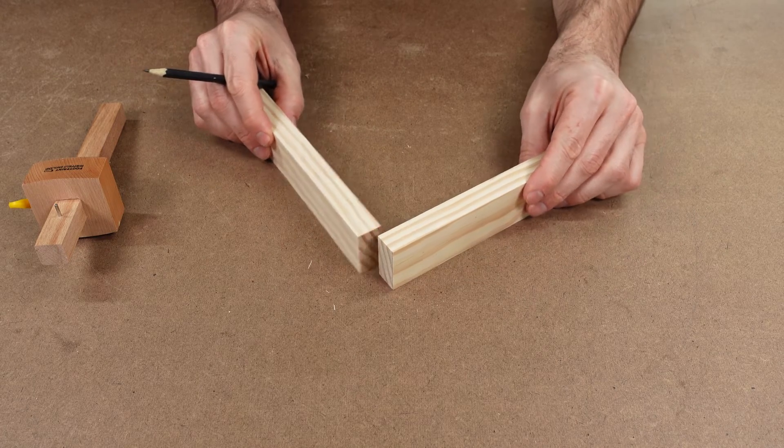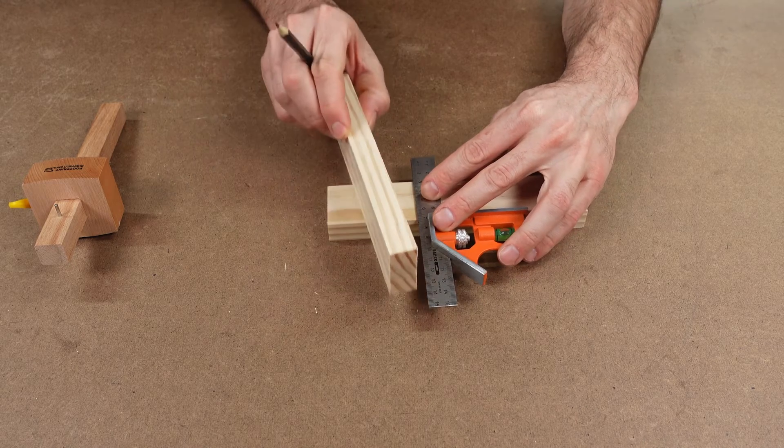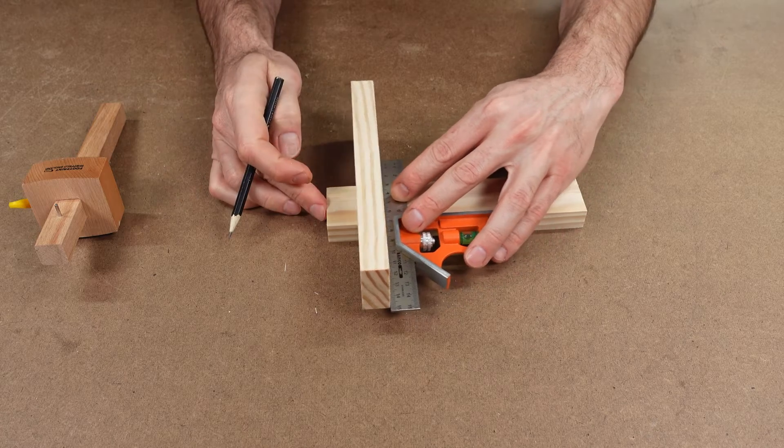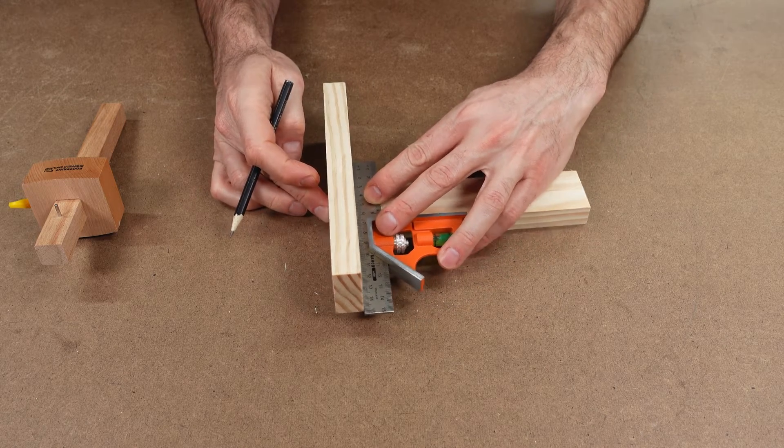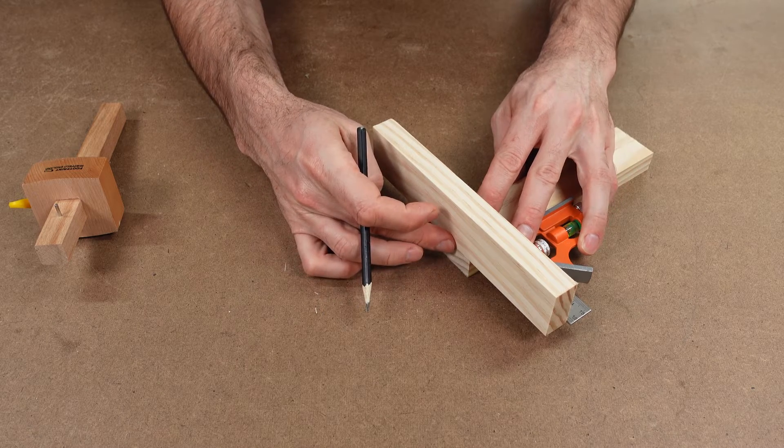Once again, it's easier to place one piece of timber over the top of the other one and align it to the edge with a square. Mark out the thickness and then mark a line about halfway down the sides.